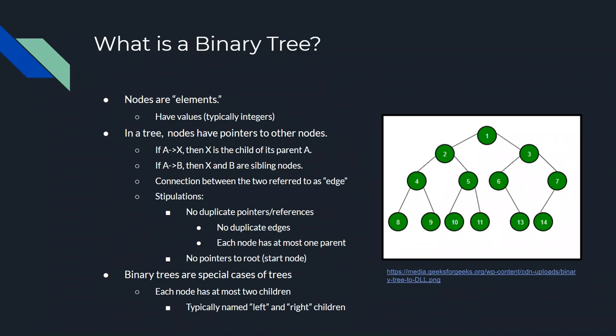These connections from A to X and A to B are called edges, and they're specifically directed edges because A connects to X, not the other way around. There's a connection from A to B, but not a connection from B to A. So these connections are directed edges.